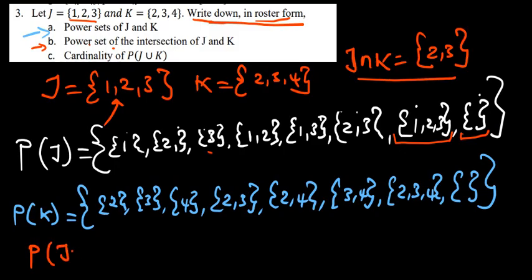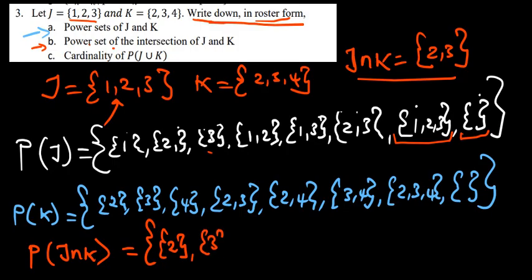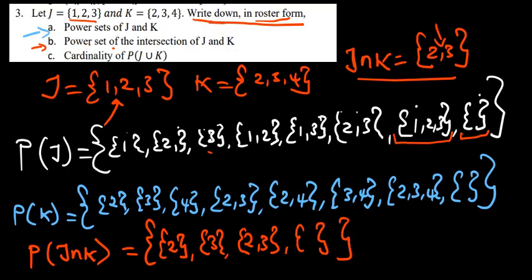Now let's write the power set of J intersection K. The power set of J∩K equals: the 2 itself, the 3 itself, then 2 combined with 3, and then the empty set. So we had 2 members in this set, meaning the number of subsets is 2 to the power 2, which is 4. We can see the subsets are just 4.